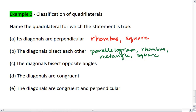Diagonals bisect opposite angles. That's a rhombus, and thus also square.